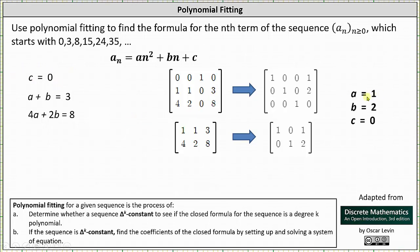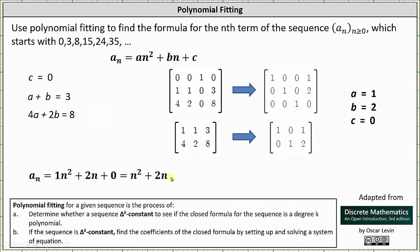Whichever technique we use, we now know a equals one, b equals two, and c equals zero, which is what we need to determine the closed formula. We substitute the values of a, b, and c into a sub n equals a·n² plus b·n plus c, which gives a sub n equals one·n² plus two·n plus zero, which simplifies to a sub n equals n² plus two n. I hope you found this helpful.